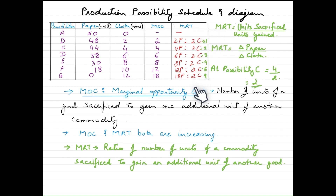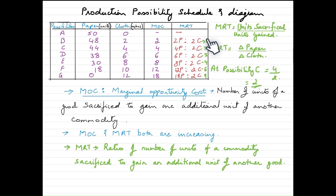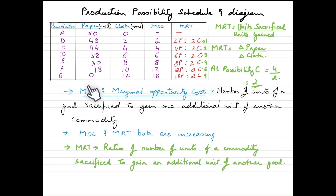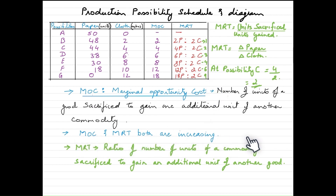At possibility C, the change in cloth is 2 (denominator) and change in paper is 4 (difference between 48 and 44), so MRT equals 2. Using the same equation across all possibilities: at B it is 1, at C it is 2 (4 over 2), at D it is 3 (6 over 2), and at G it is 9 (18 over 2). Just like MOC, MRT is also in an increasing trend. The significance of both MOC and MRT increasing becomes clear when we plot the diagram.